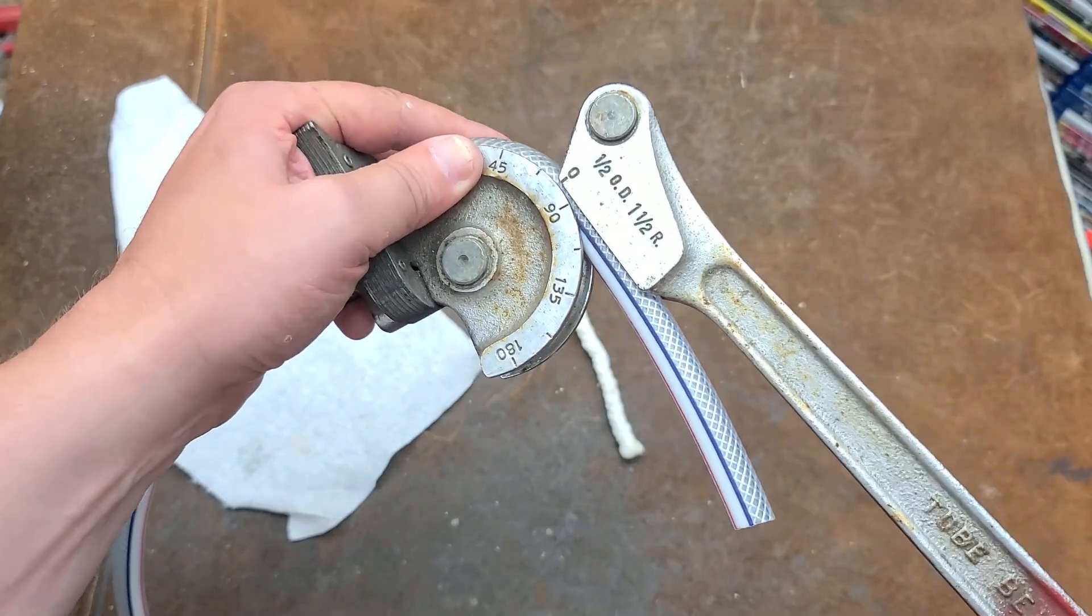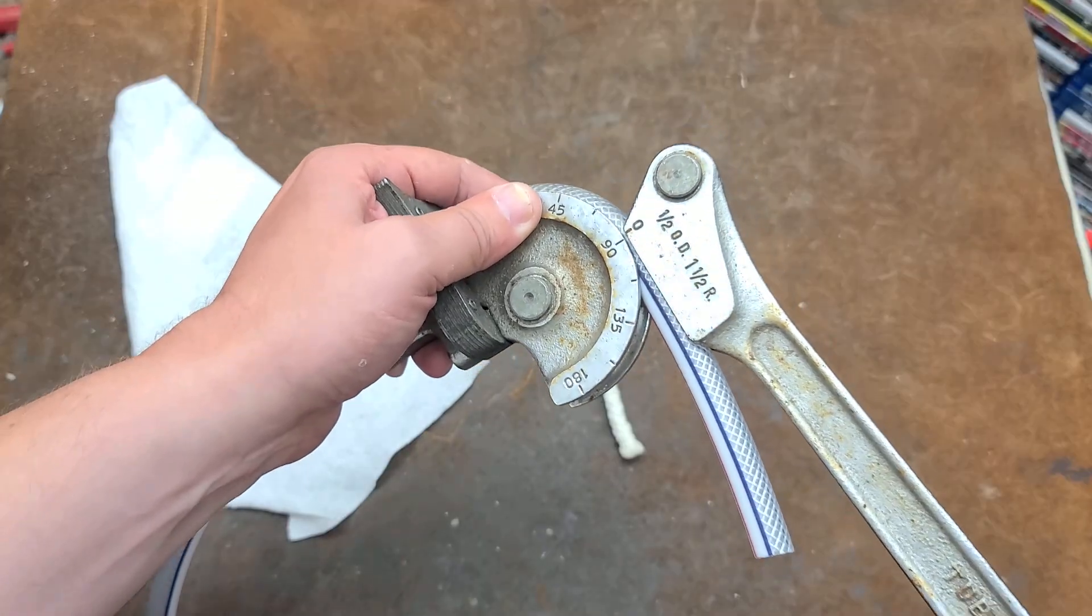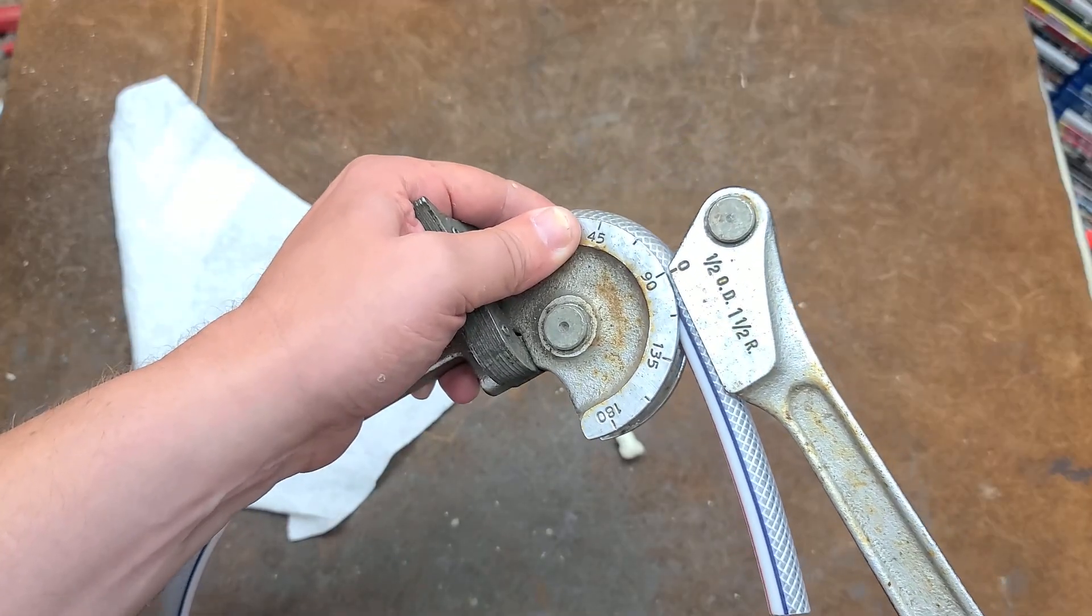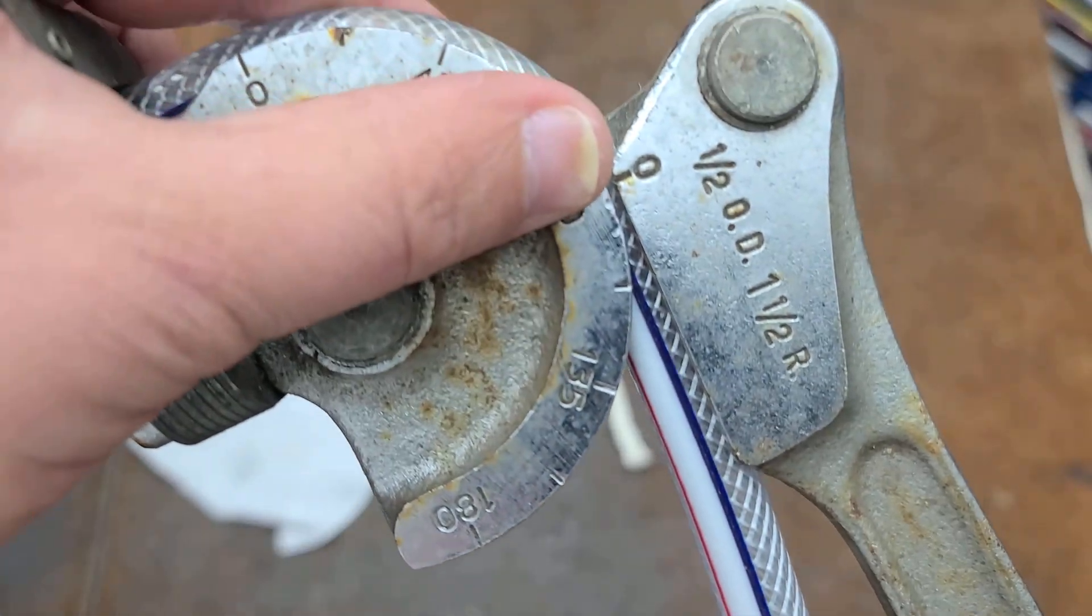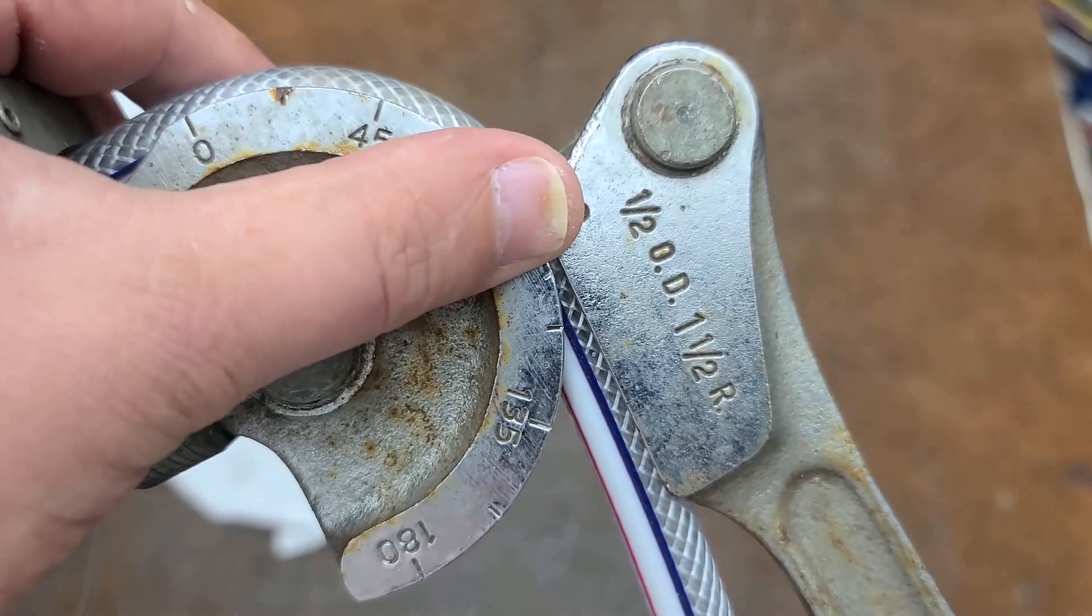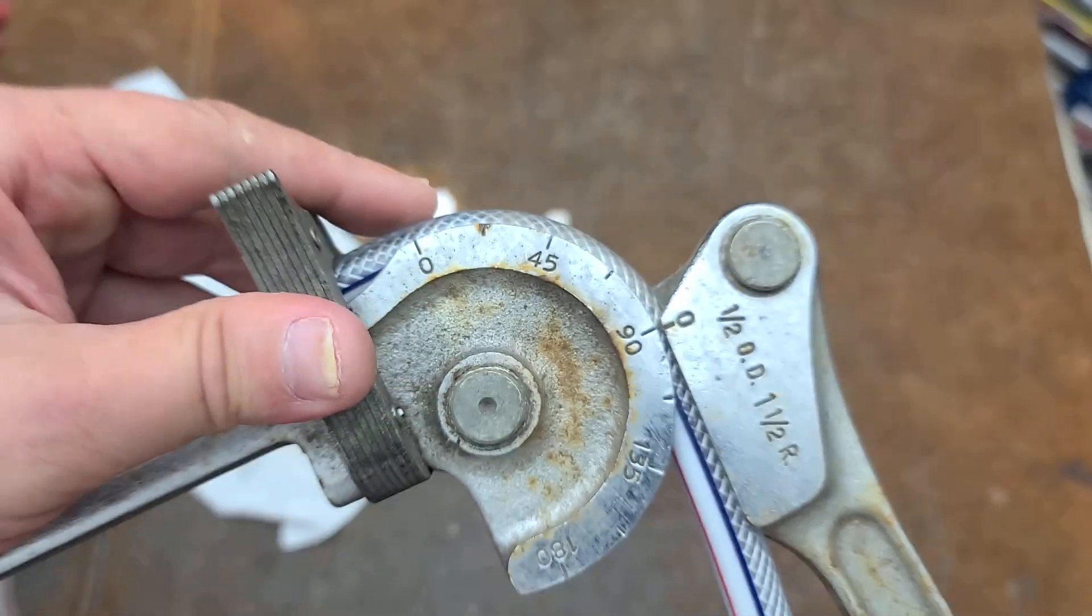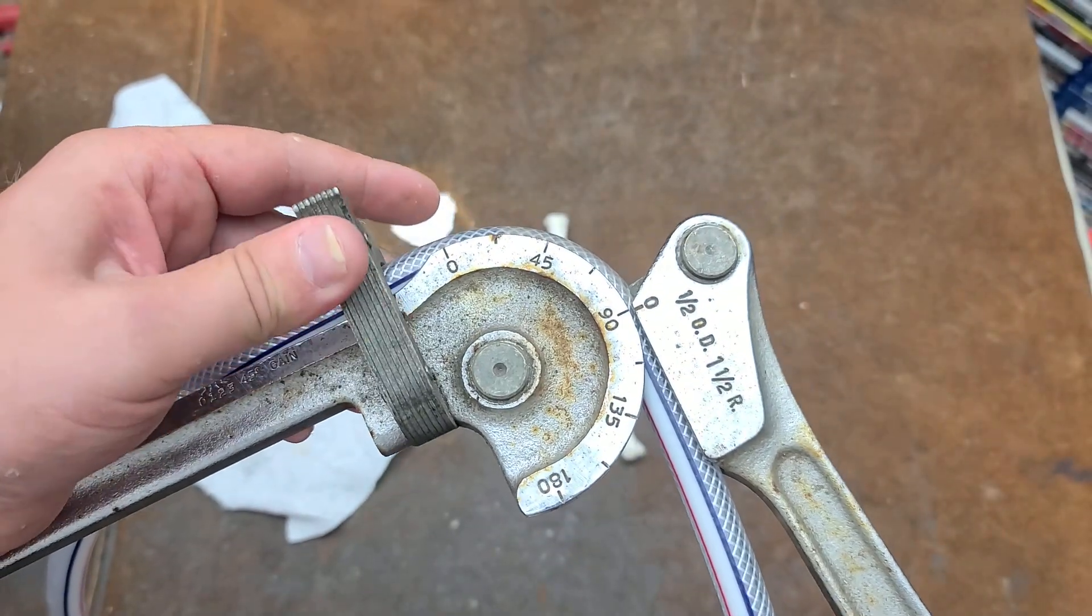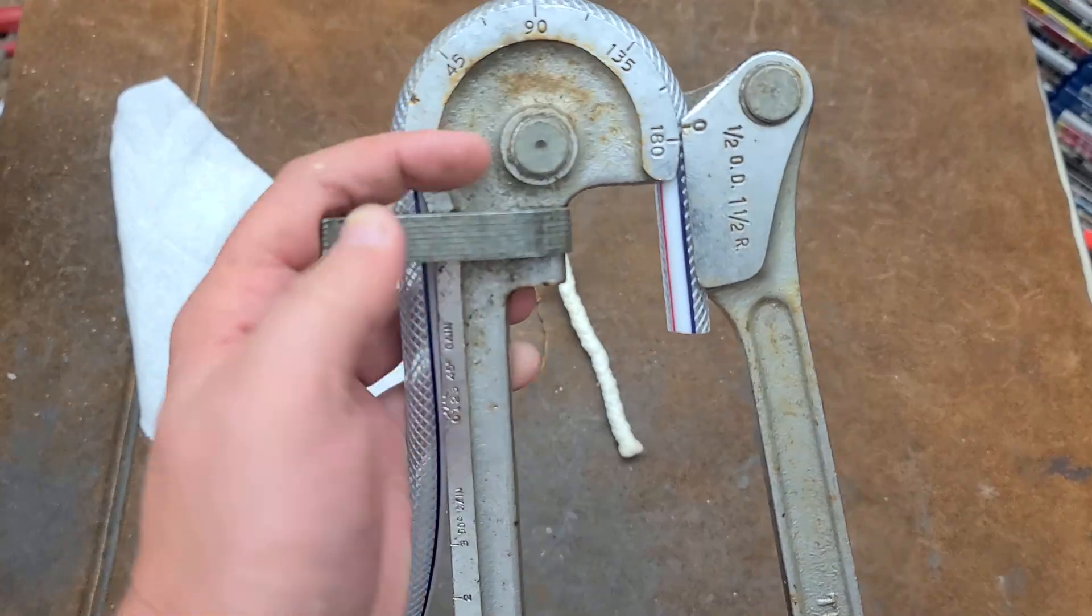This is what you use for refrigeration, air, water and that type of stuff. It's a half-inch outer diameter tubing, one and a half inch radius, which means if you do a 90 degree that will be a three inch circle across there.